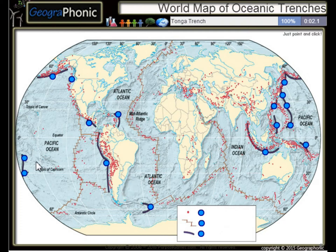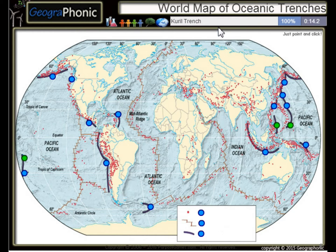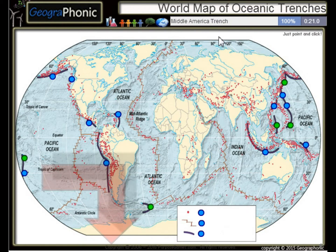The first one we see is the Tonga Trench, this is the Philippine Trench, the Mariana Trench, the Kuril Trench, the South Sandwich Trench, and the Middle America Trench. All the dots on the map we see here are epicenters, or used to be earthquakes.